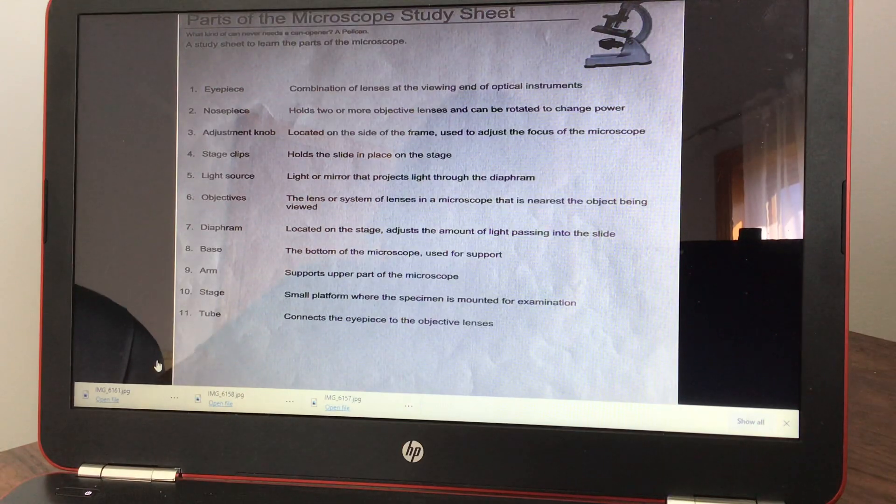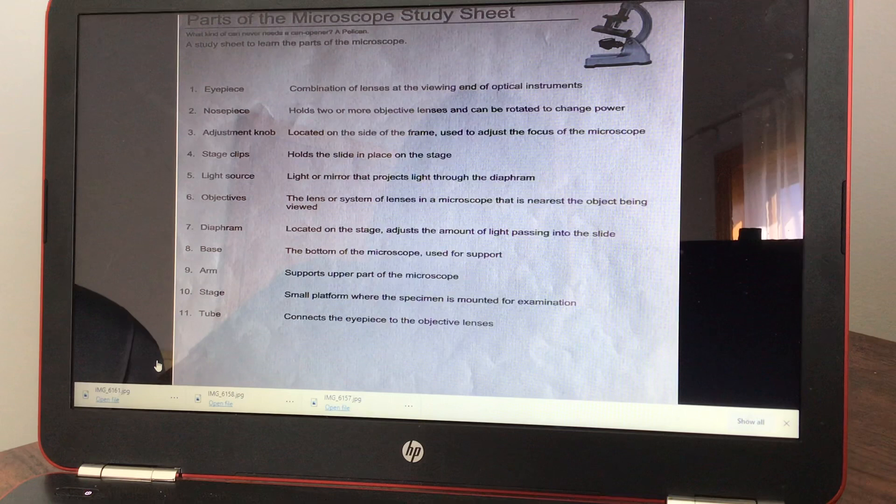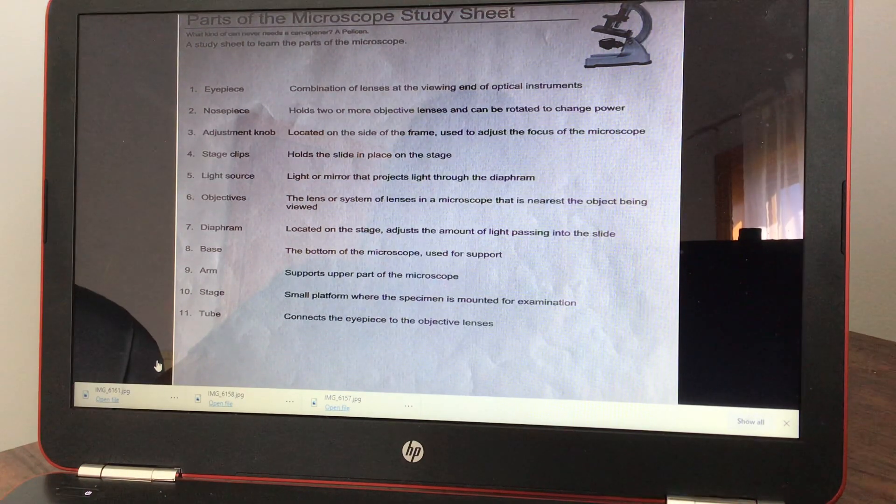Objectives: the lenses or system of lenses in a microscope that is nearest the object being viewed. Diaphragm is located on the stage, adjusts the amount of light passing into the slide. Base is the bottom of the microscope used for support.